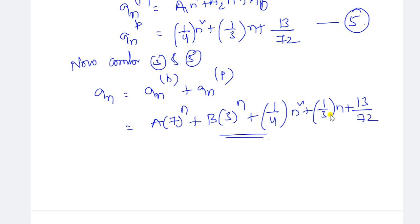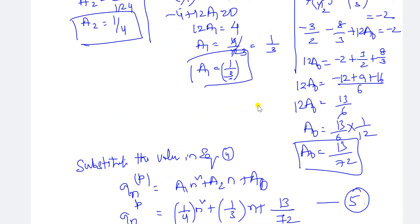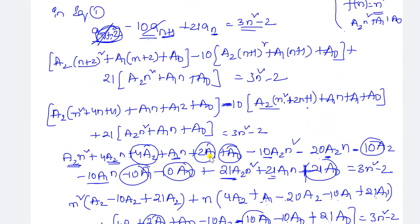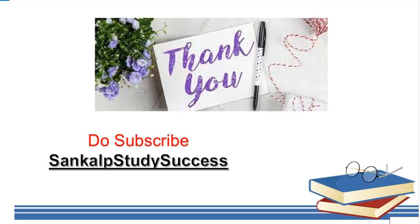This is the final answer. When f(n) equals some n² term plus a constant term — here 3n² minus 2 — this is how you solve the non-homogeneous recurrence relation. Let us discuss more examples in the next video. Hope you understand. Please like, share, comment, and subscribe to our channel Sankal Study Success. Thank you so much for watching.